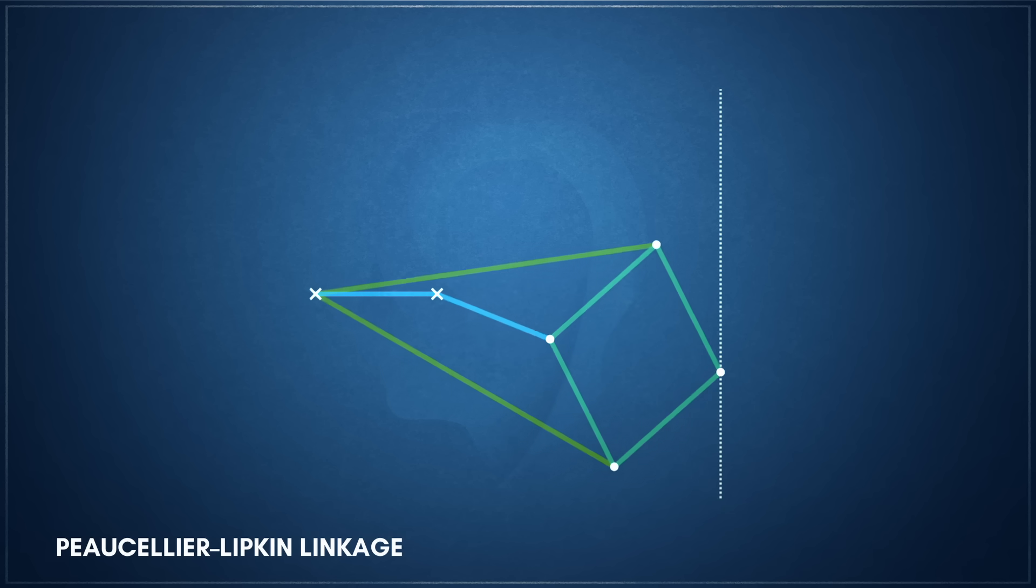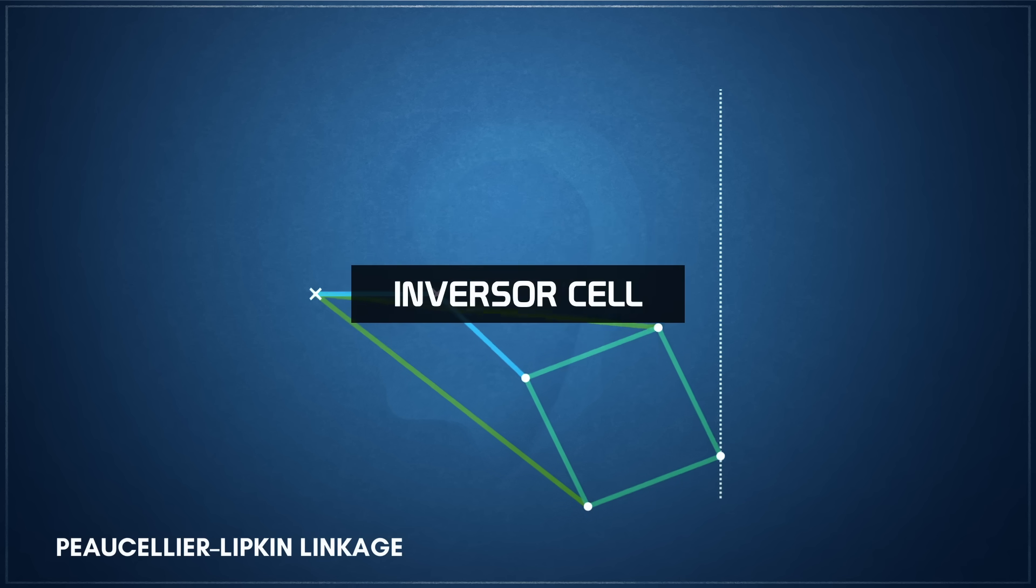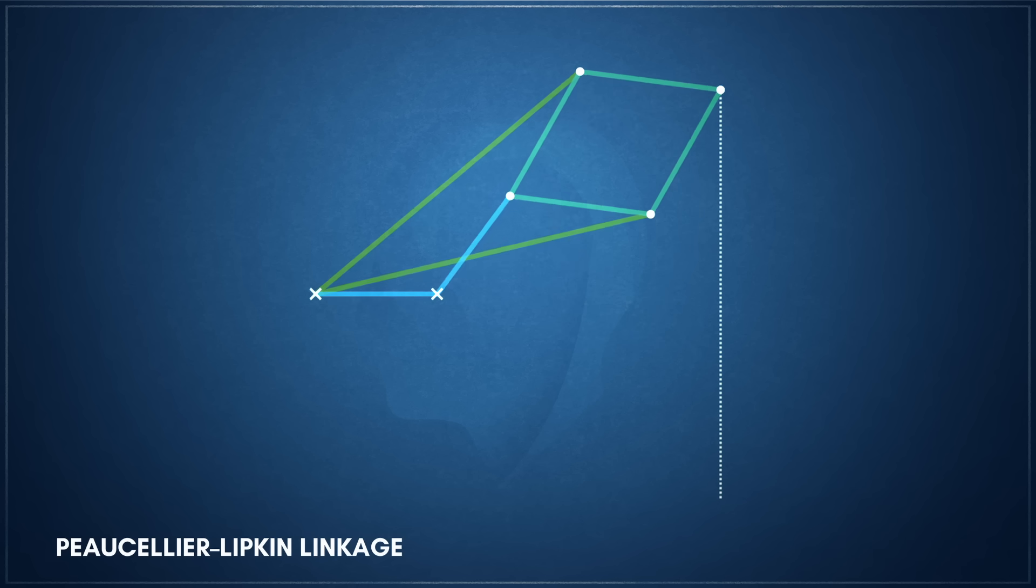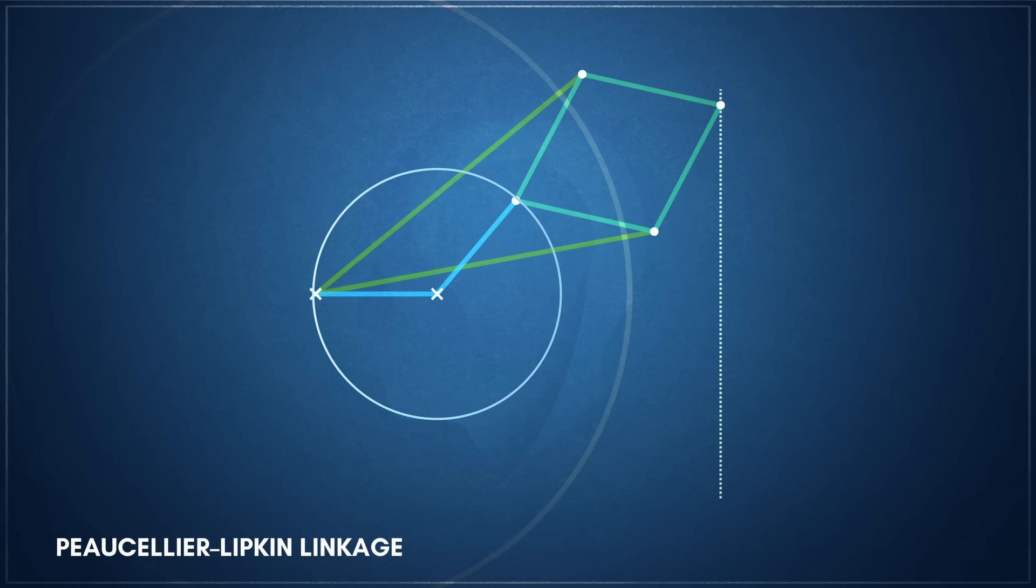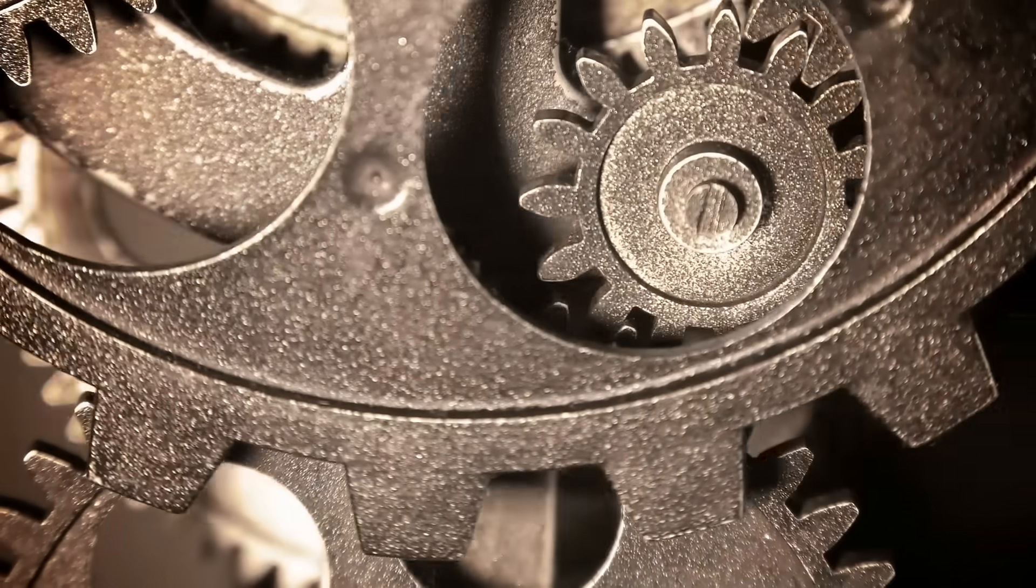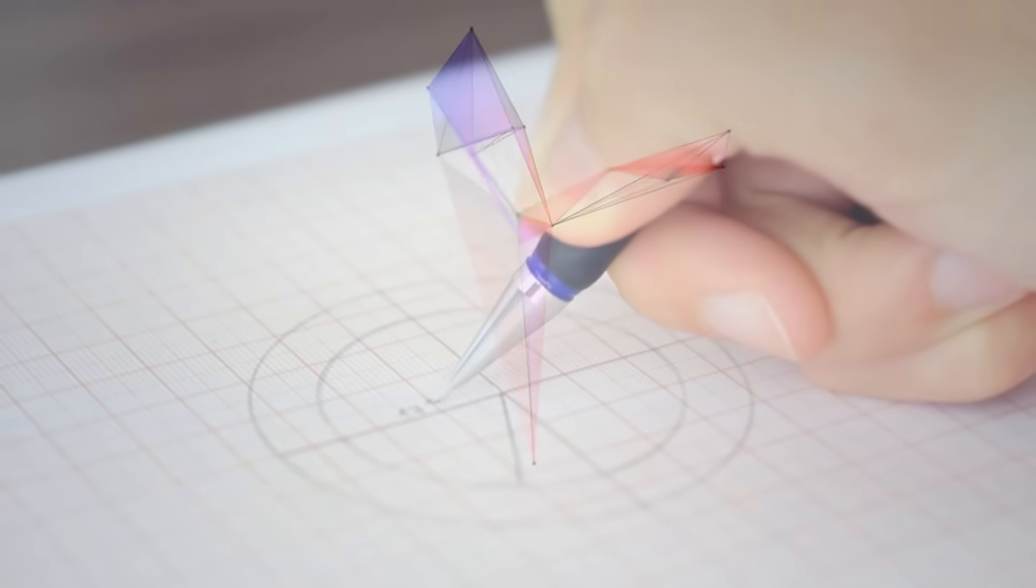The mechanism that Peaucellier and Lipkin created, known today as the Peaucellier-Lipkin linkage, employs the principle of inversion using a system known as an inversor cell. The linkage consists of seven moving links and one grounding link. Its core is a rhombus of four equal length links, often called a kite. This rhombus is connected by two longer equal length links to a fixed pivot point, which serves as the center of inversion. The linkage is constructed in such a way that two of its opposing vertices are always geometric inverses of each other with respect to the fixed pivot. By then adding one final link to constraint kite movement to a circular path that passes through the center of inversion, the linkage mechanically forces its inverse point to trace out a perfect straight line. The inversor cell linkage concept was revolutionary at the time as it shifted industrial revolution era engineering from practical intuition to a solution formed purely by abstract mathematical proof.